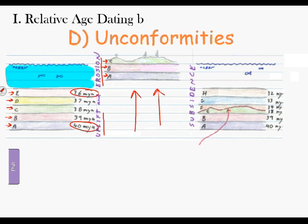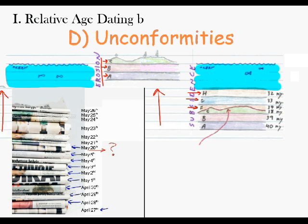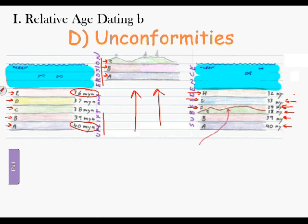Because of tectonic processes, this land might subside and the ocean might come back once again. Millions of years later, we get more deposition in the ocean — this time layers F, G, and H. F was deposited 34 million years ago, G at 33, and H at 32 million years ago. Just like we saw with our newspapers, we've got a 40 million-year-old layer, 39, 38 — and then some rock is missing — then 34, 33, and 32. What about the 37s, 36s, 35s? Where did that time go?